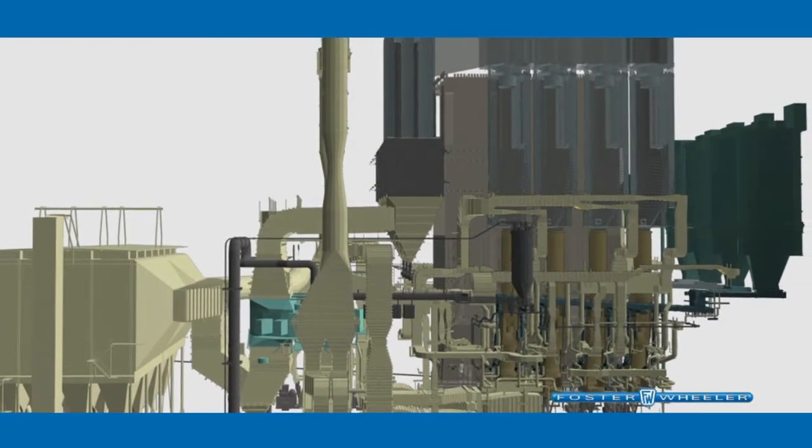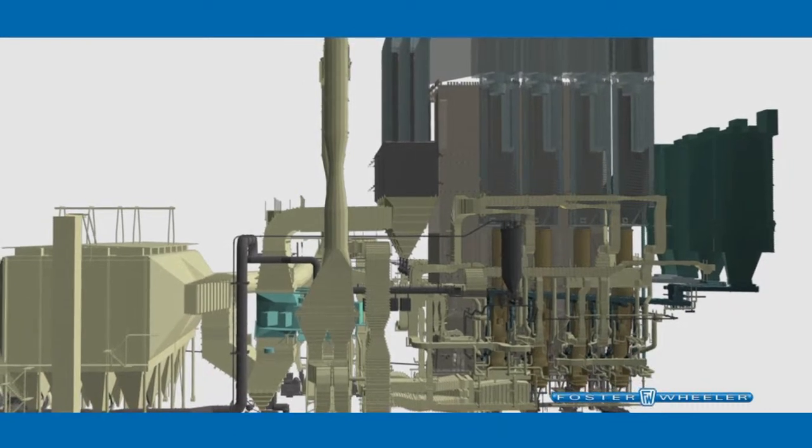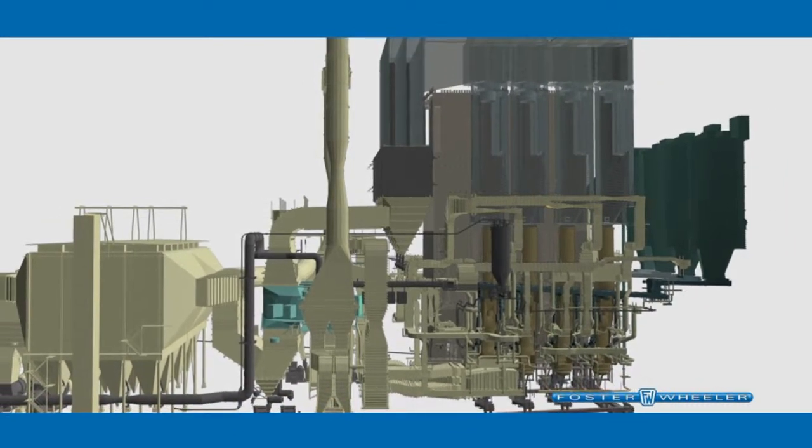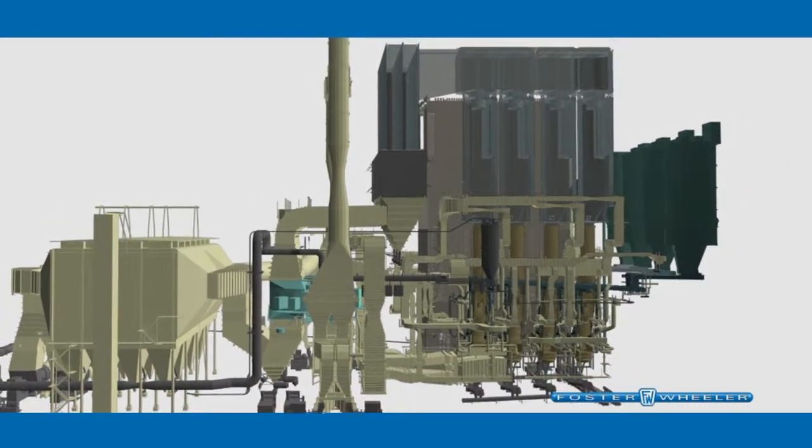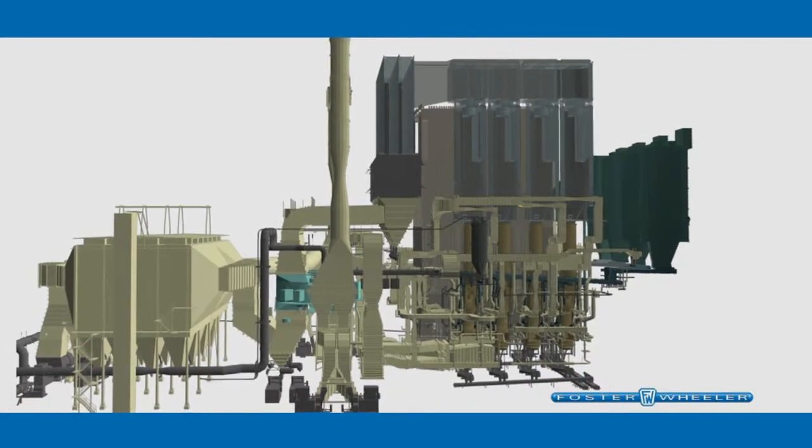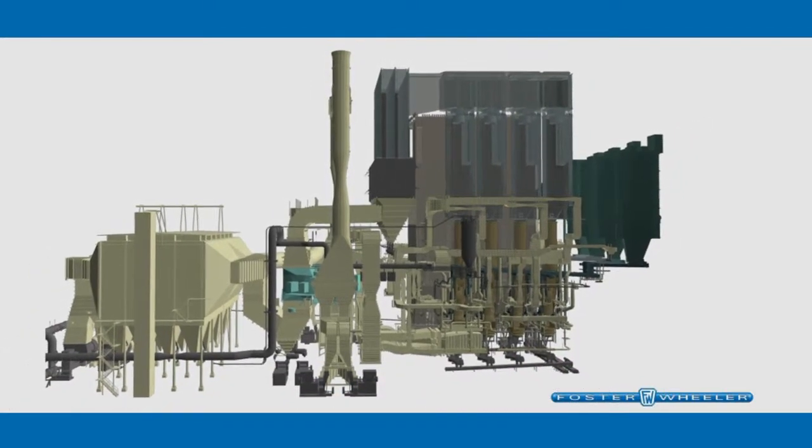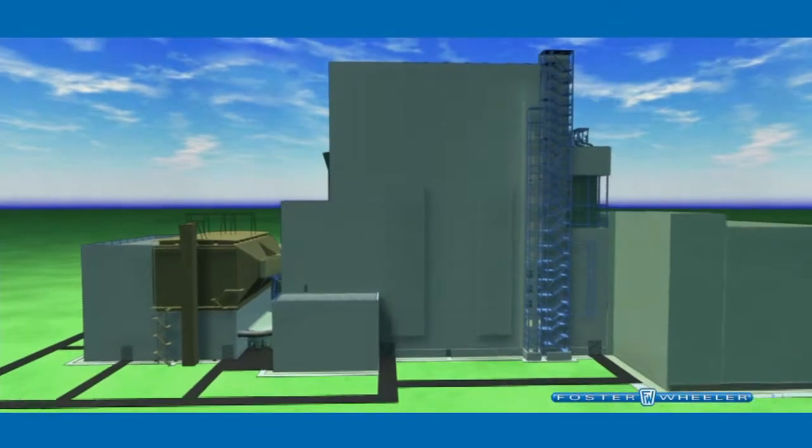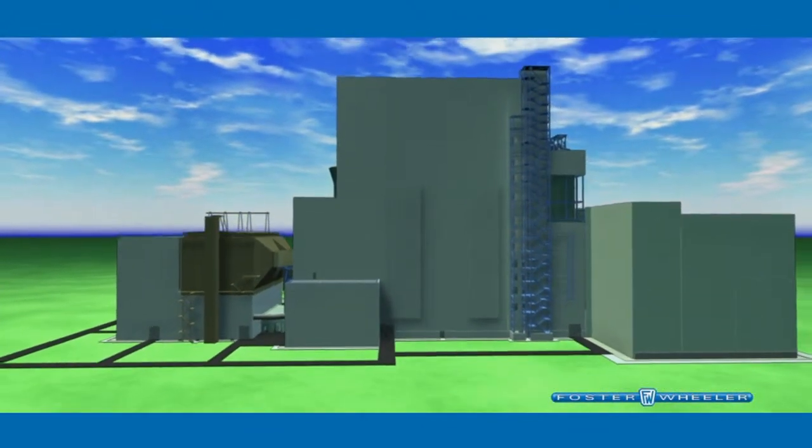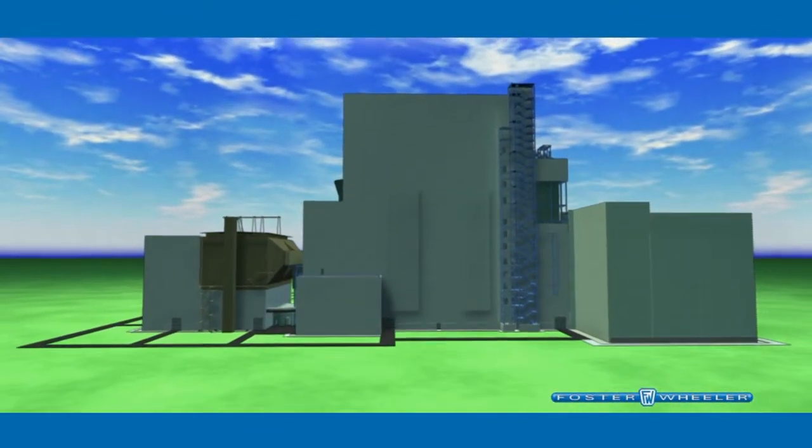With today's heightened concern for carbon emissions, Foster Wheeler CFBs have successfully burned biomass, recycled and waste materials, providing a reduced carbon solution for large-scale utility power generation, as well as for industrial and district heating plants.